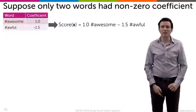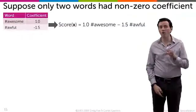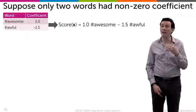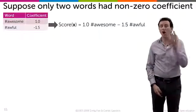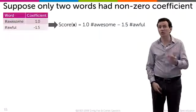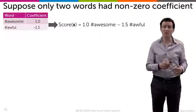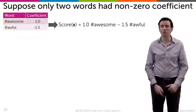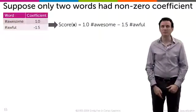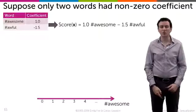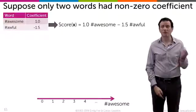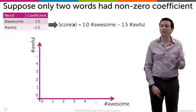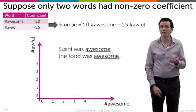So what does that mean? That means that the score of any sentence is 1.0 times the number of times the word "awesome" shows up, minus 1.5 times the number of times the word "awful" shows up. Let's plot that into a graph which depends, for every sentence, on the number of "awesomes" and the number of "awfuls".